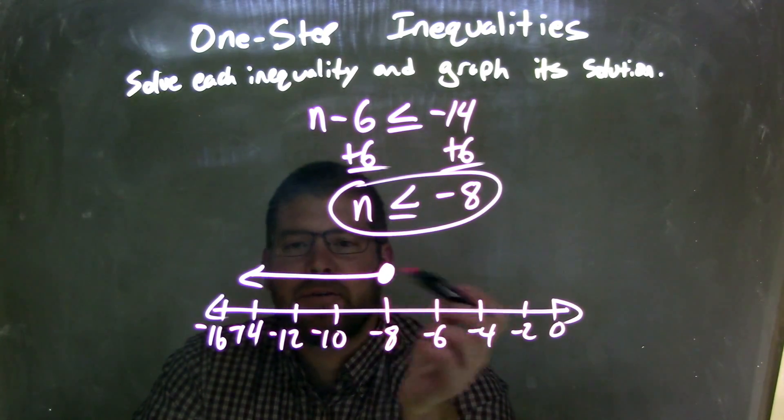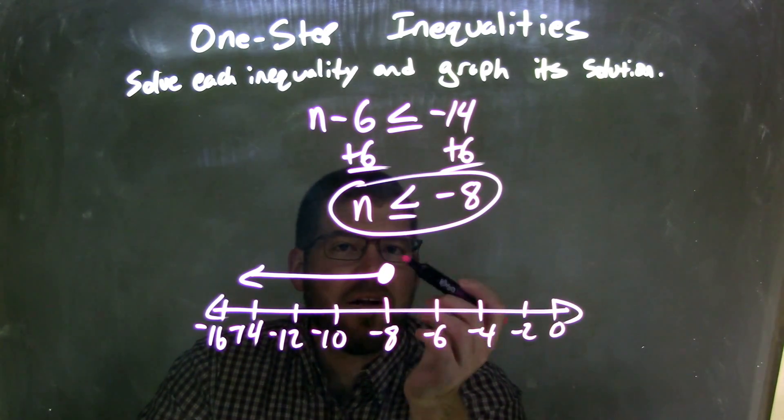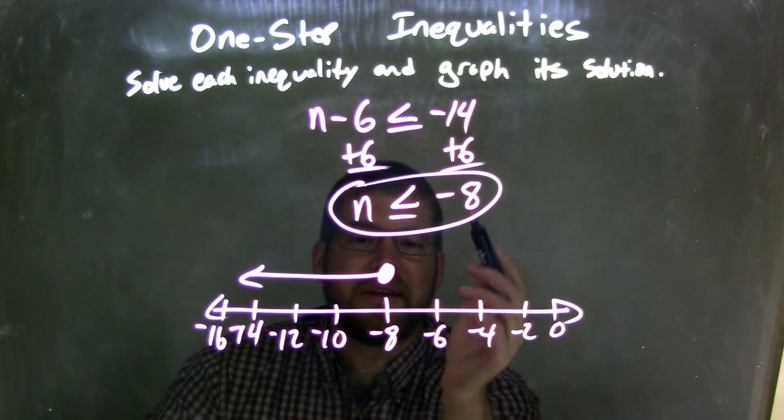And then my arrow goes to the left. My arrow goes to the left because it's less than. And so this graph matches our final answer of n is less than or equal to negative 8.